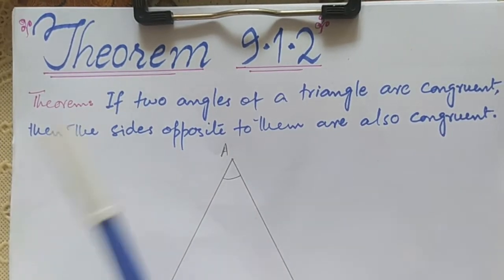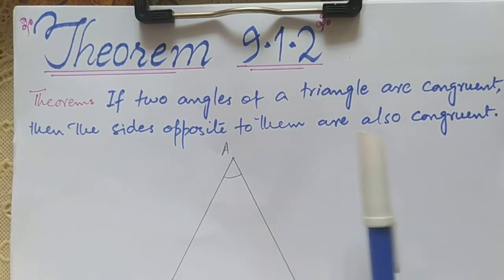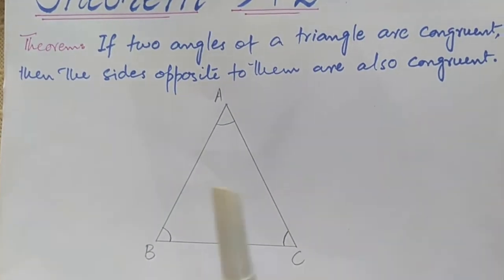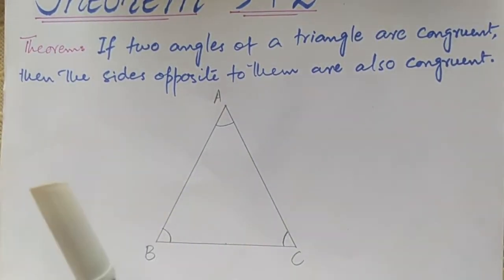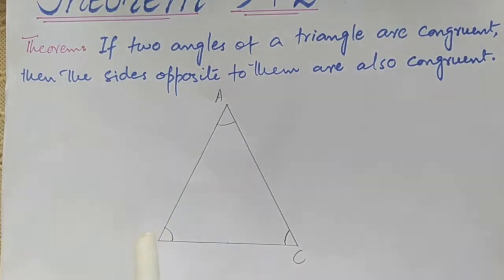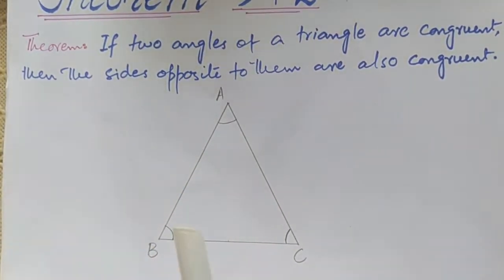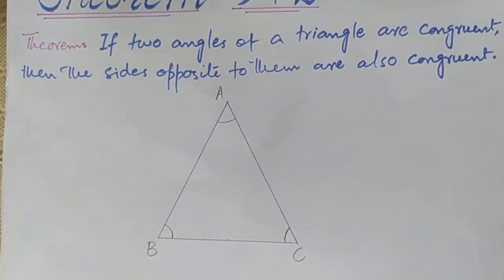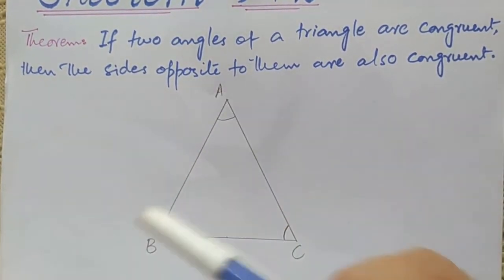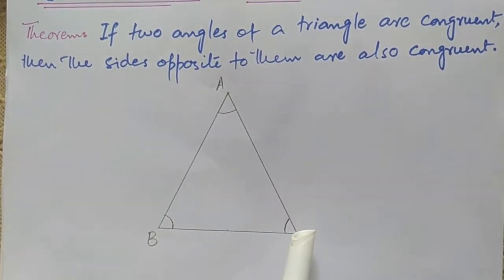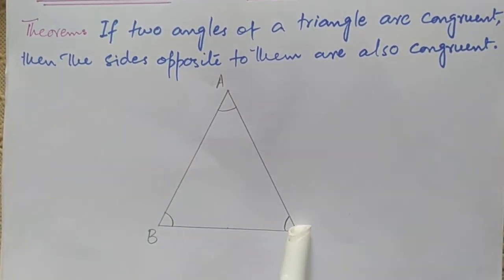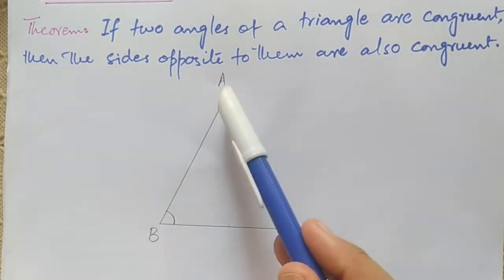The statement of the theorem says that if two angles of a triangle are congruent, then the sides opposite to them are also congruent. So in triangle ABC, if angle B and angle C are equal, then their opposite sides will be equal — meaning side AC and side AB will be congruent.